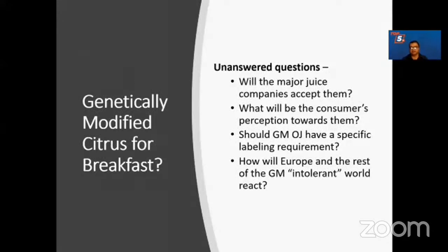We have these transgenic trees and we know these genes work, but can we actually get them to the consumer? There are several unanswered questions. Will the major juice companies accept them? What will be the consumer's perception towards genetically modified juice? Should genetically modified orange juice have a specific labeling requirement so you can understand which juice is genetically modified? And how will Europe and the rest of the GM-intolerant world react? These are some answers we need before we can commercialize our transgenic lines.